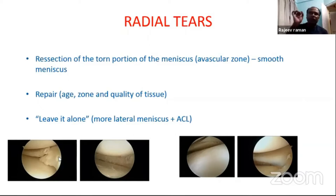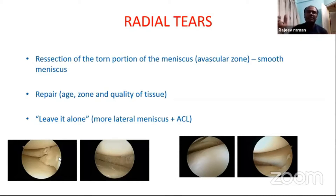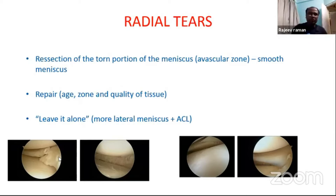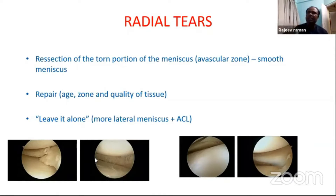So whenever you get a radial tear, once you put your scope inside the knee, debride the torn part of the meniscus in what we call the avascular zone — we call this meniscal balancing or smoothing of the meniscus, both terms meaning the same thing. Smoothen the radial tear, make it a safe area, balance this part, and the knee will be painless while preserving most of the meniscus needed to prevent the crushing load over the knee joint.